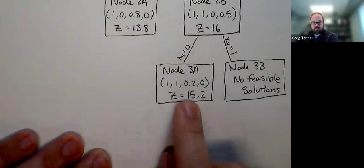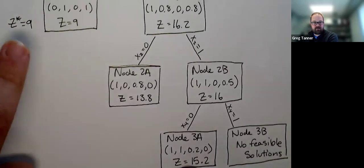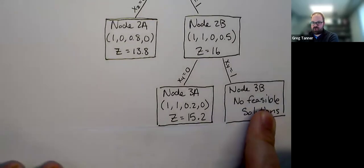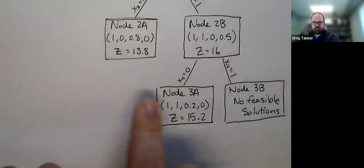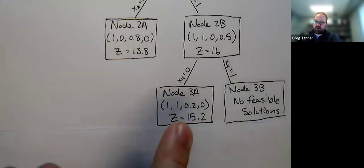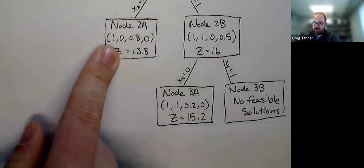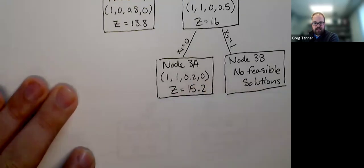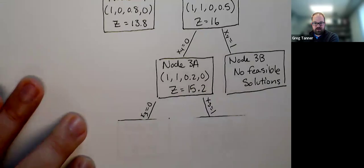So let's bring that down here. So node 3a, non-integer solution, z is better than the current best. Current best is still 9. So that's what z star is. 3b, no feasible solution. We're not going to keep branching on 3b. It's done. So we now have both 2a and 3a are both active non-integer solutions. We look at them and compare which one has the better upper bound. 3a has the better upper bound. So we're going to branch on that. We're going to hold on 2a for now. So non-integer variable is x3. And so we're going to branch on that for 0 and 1.